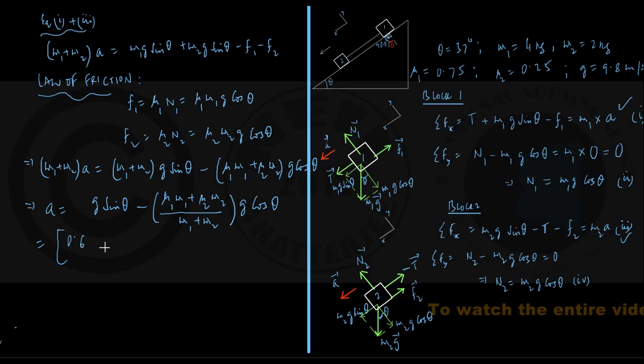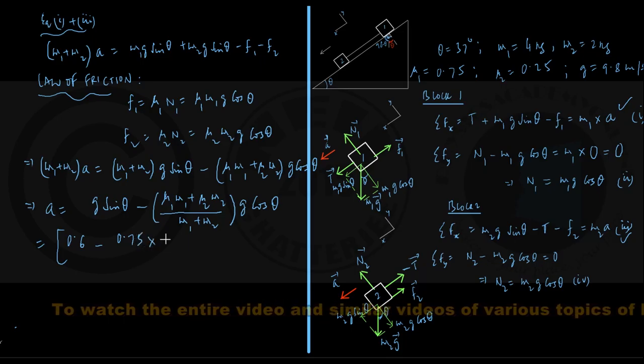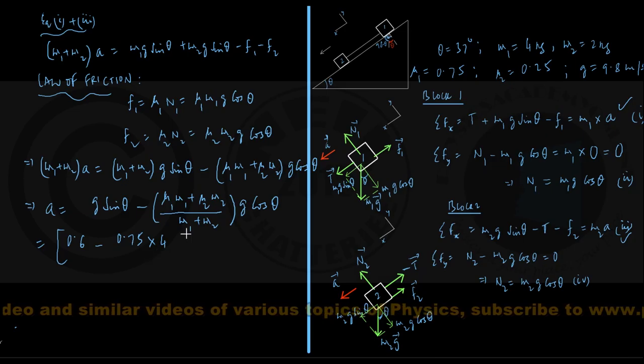that is 0.6 minus mu1, that was given to be 0.75, into mass m1, that was given to be 4 kg, I am just writing the numbers only,